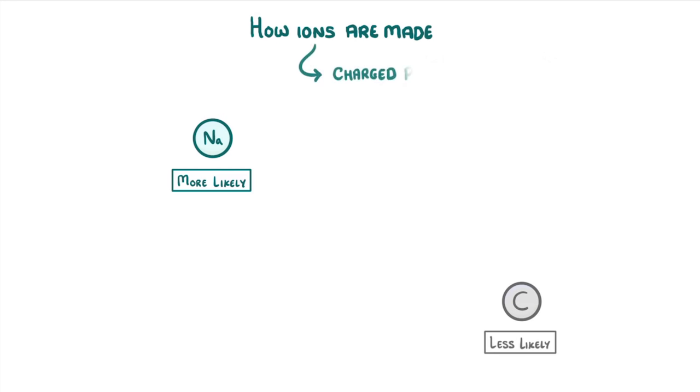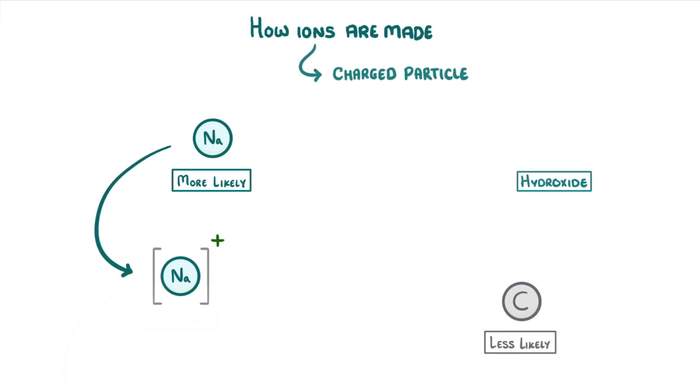An ion is just a charged particle, so it could be a single atom, like Na+, or a group of atoms, such as a hydroxide ion, which is OH-.